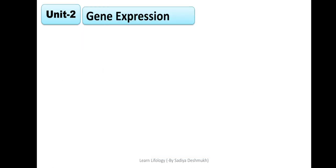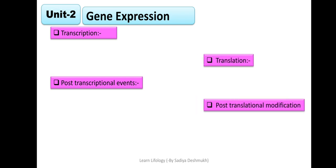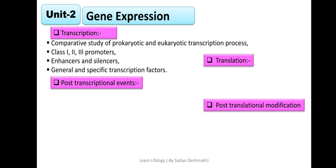The second unit is Gene Expression. This is a very important unit and it is easy. Here we have transcription, post-transcriptional events, translation, and post-translational modifications. These are the four headings under which we have to study. In transcription, almost everyone knows the central dogma of protein synthesis, but here we have to go very deep. We need a comparative study of prokaryotic and eukaryotic transcription processes.